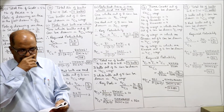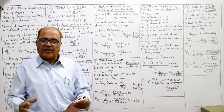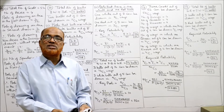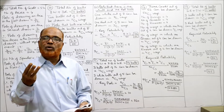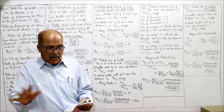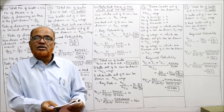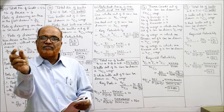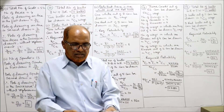Problem 13: A man draws at random 3 balls from a bag containing 6 red and 5 white balls — total 11 balls. Out of 11 balls, 3 are drawn, so total ways = 11C3. What is the chance of getting all balls red? There are 6 red balls; 3 red balls out of 6 can be drawn in 6C3 ways. Required probability = 6C3 / 11C3.